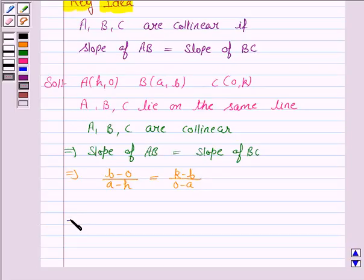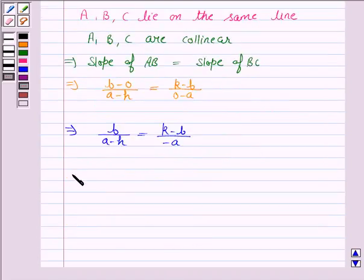And slope of BC is given by k minus b upon 0 minus a. This again implies b/(a-h) equals (k-b)/(-a).